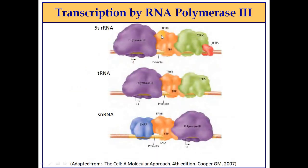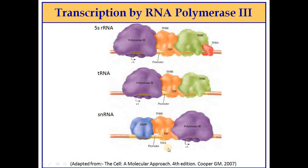Regarding transcription factors for RNA polymerase 3: for 5S rRNA, TF3A is recruited first, followed by TF3C, then TF3B, and then the polymerase. For tRNA, there is no TF3A — the promoter region directly recruits TF3C, followed by TF3B and then the polymerase. For small nuclear RNAs, SNAP and TF3B cooperatively bind to the promoter element and recruit RNA polymerase 3 to start transcription.